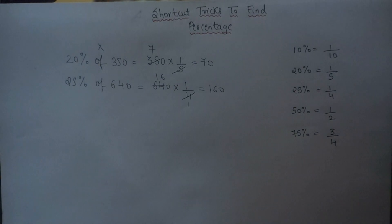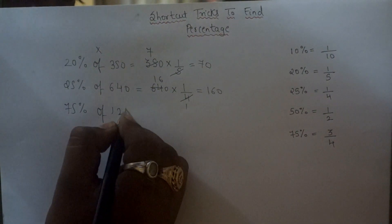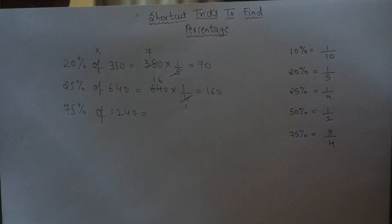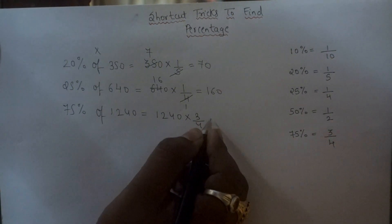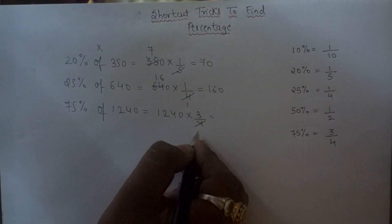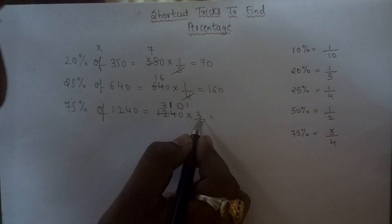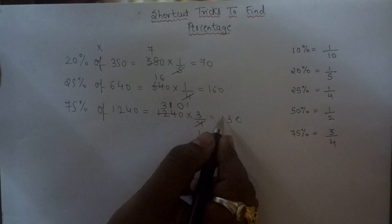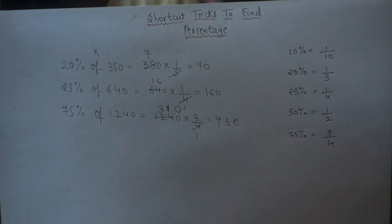Let's take a bigger number: 75% of 1240. To find 75% of any number, simply multiply that number by 3 upon 4. So 1240 into 3 upon 4 — cancel out. 4 ones are 4, 3s are 12, 4 ones are 4, and this is 0. Now multiply 310 by 3 and you get 930. So 75% of 1240 is 930.